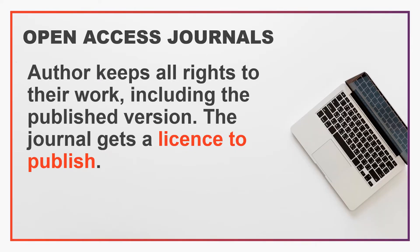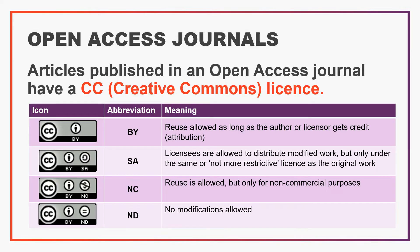So we've talked about publishing in a subscription journal, now let's look at publishing in an open access journal. When publishing in an open access journal the author keeps all rights to their work, including the final published version. The journal then gets a license to publish the work. When publishing your work in an open access journal you choose which license you want to assign to your work. It's important to note that once chosen you cannot change the license you have assigned, although you can allow exceptions.